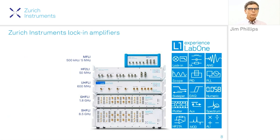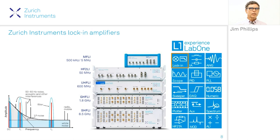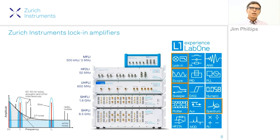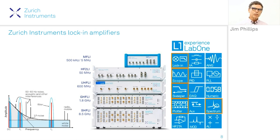We use a lock-in amplifier to modulate our signal and get above the low-frequency drift and noise — the 1/f noise — and position our measurement in frequency space where noise is minimized. With a digital lock-in amplifier we can offer additional tools. Suppose you come into the lab and find the signals from the demodulator don't make sense. With a digital lock-in amplifier you can jump to the oscilloscope on the input side, look at the time or frequency domain, and identify noise sources such as power line interference or a switching power supply.